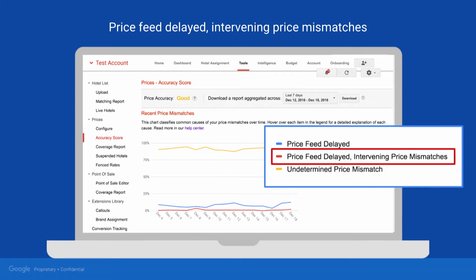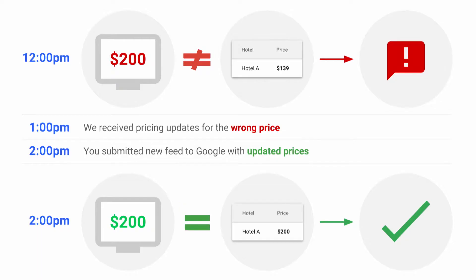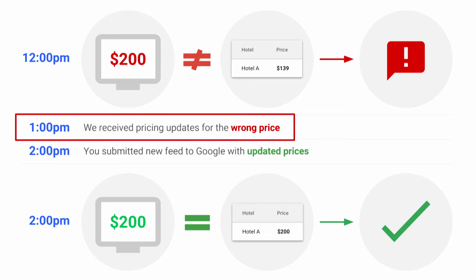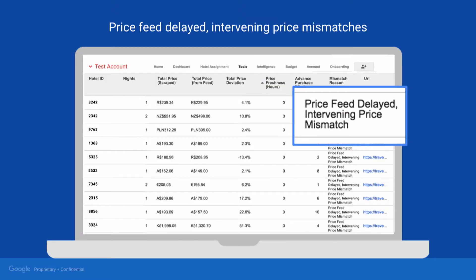Now let's look at Price Feed Delayed, Intervening Price Mismatches. This error is similar to Price Feed Delayed. The main difference is that in between the time we fetched prices from your site and the time we received an update with the correct price, we also received pricing updates with the wrong price. Once again, you can use the table to sort and find sample itineraries with this issue to share with your tech team. Ask them to check that your Price Update Pipeline is working correctly.